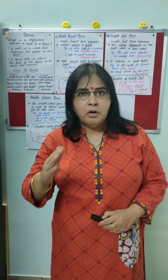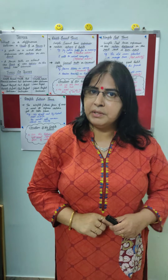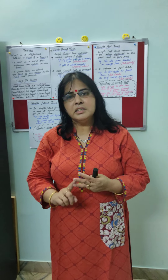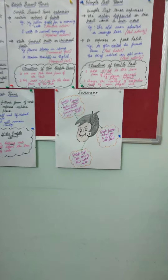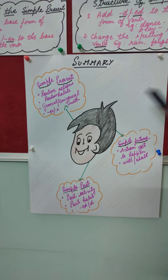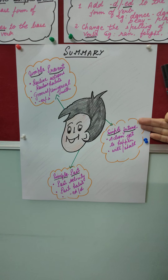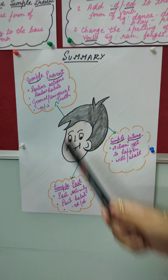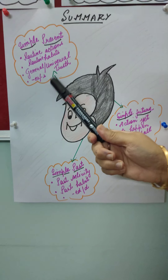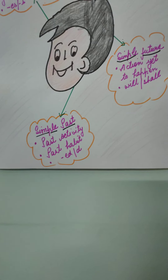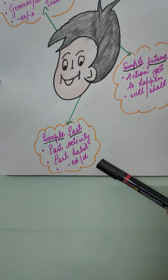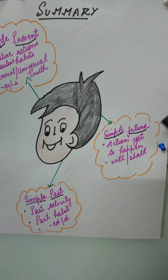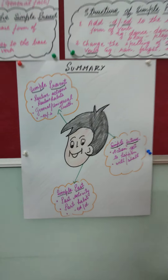I hope children it's very clear. What we studied just now was only the simple tenses — simple present, simple past, and simple future. Let's have a quick summary. Simple present: routine actions, routine habits, general universal truths — add ES and S. Simple past: past activity, past habit — add ED and D. Simple future: action yet to happen — add will or shall.